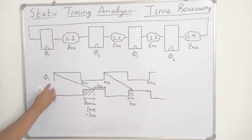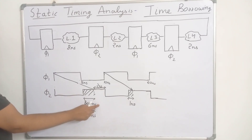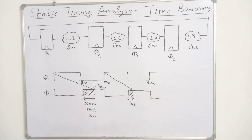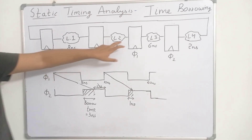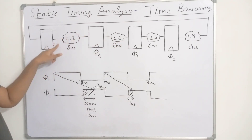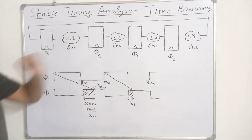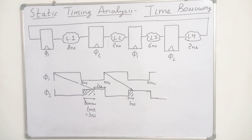We are borrowing 3 nanoseconds. The delay for combinational logic L1 is 8 nanoseconds, and the delay of path L2 is only 2 nanoseconds. So we can borrow 3 nanoseconds, which is the borrowing time. The delay on path L2 is short enough to compensate for the extra delay on path L1.